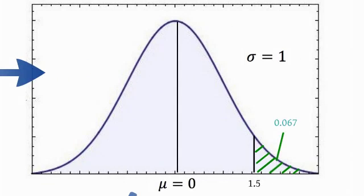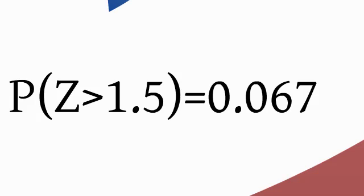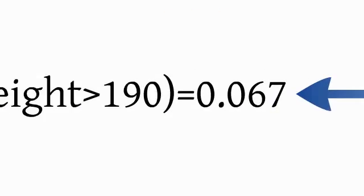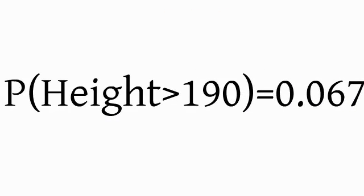And this z-score of 1.5 is exactly the same point on this distribution as 190 was on the original distribution. So that area above 1.5 is exactly the same area above 190 on the previous distribution. And we can find using our tables that it's 0.067, that particular area. So the probability of z being greater than 1.5 is 6.7%. The probability of our height being greater than 190 is also 6.7%. So that's the probability of finding someone that's greater than 190 centimeters in that particular class.